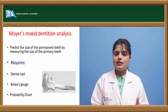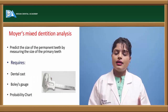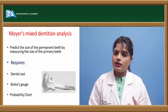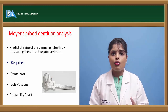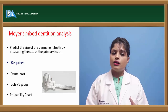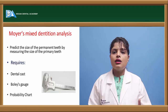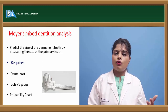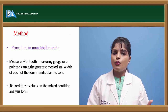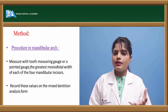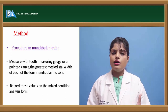The basic requirements of the mixed dentition analysis include a maxillary and mandibular cast, Boley's gauge, vernier calipers, compasses, a divider, and a Moyer's probability chart, which is different for both the maxillary and mandibular teeth.